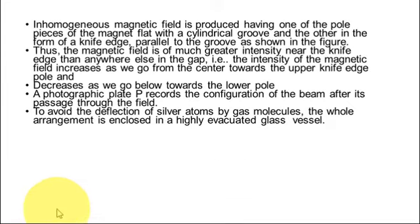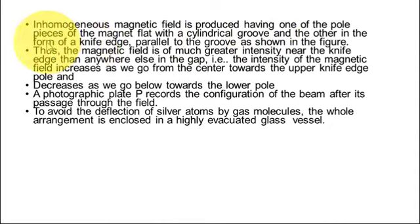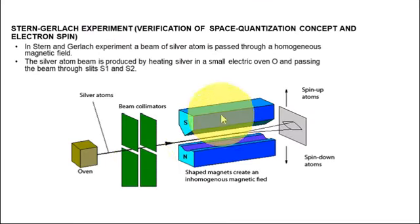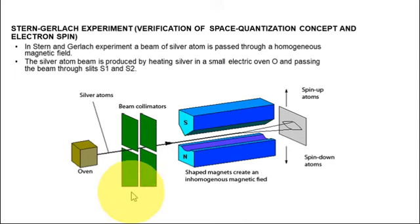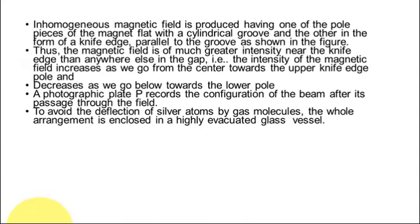The inhomogeneous magnetic field is produced with one pole having a flat surface with a cylindrical groove and the other in the form of a knife edge parallel to the groove, as shown in the figure. The inhomogeneous magnetic field is created by the flat cylindrical north pole and the sharp knife-edged south pole, which are parallel to each other. It is very important to note that the silver atoms pass through this inhomogeneous magnetic field.